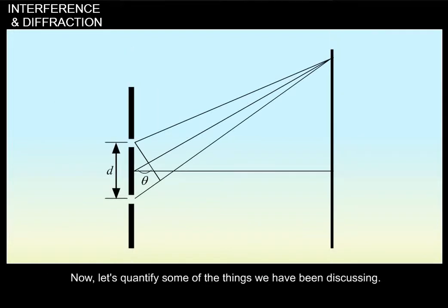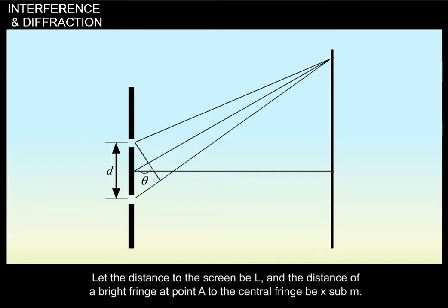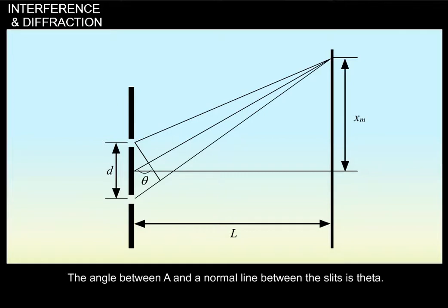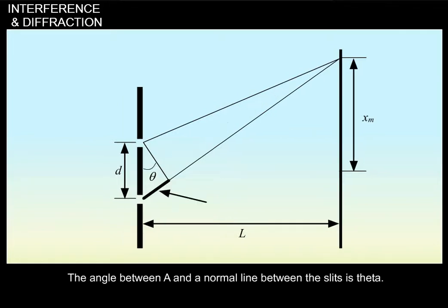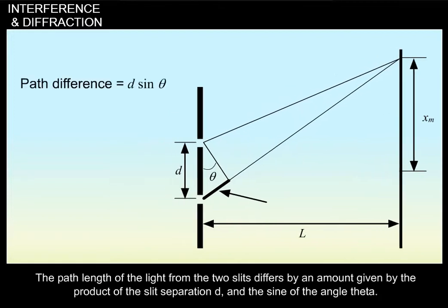Now, let's quantify some of the things we have been discussing. Let the distance to the screen be L and the distance of a bright fringe at point A to the central fringe be x sub m. The angle between A and a normal line between the slits is theta. The path length of the light from the two slits differs by an amount given by the product of the slit separation d and the sine of the angle theta.